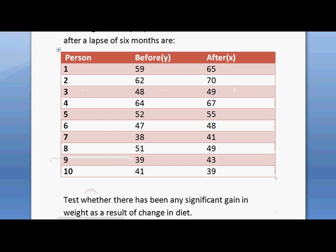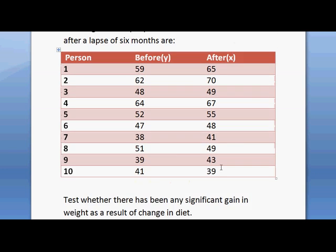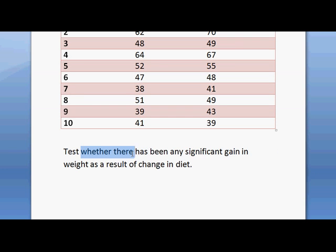We denote the before weight as Y and after weight as X. That is, before diet weight is denoted by Y and after diet weight is denoted by X. You need to test whether there has been any significant gain in weight as a result of change in diet.